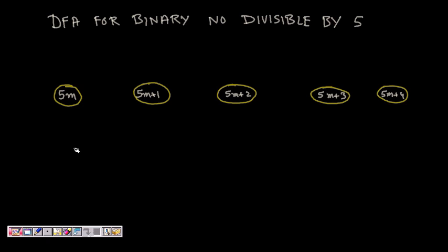So these give us our 5 states. When we get a binary number, it is either divisible by 5, or it leaves a remainder of 1, 2, 3, or 4. These are our states, but now we need to determine how the transitions happen.